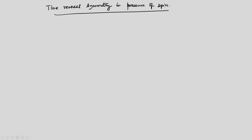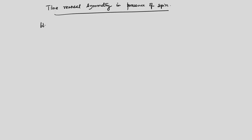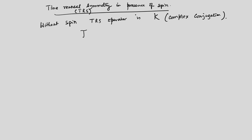Let me remind you that the time reversal symmetry operator without any spin in the problem is the complex conjugation operator. So without spin, the time reversal symmetry operator is simply K, the complex conjugation. But with spin, this is not sufficient.